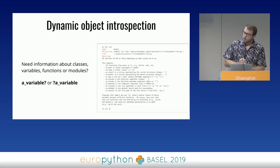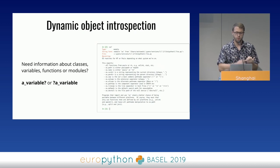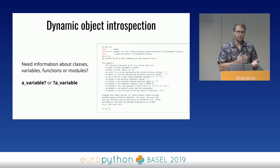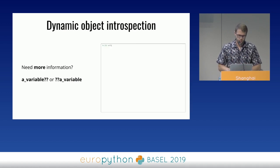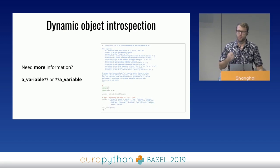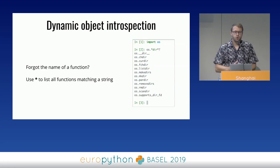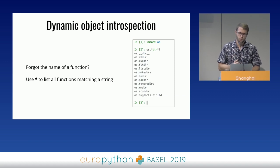What I really love about IPython is how easily you can access the documentation of basically any object — classes, variables, functions, modules. All you have to do is append or prepend a question mark to the name of the object. And if you want to see the whole source code of an object, use two question marks instead. Also, if you're not sure what the name of the function you want to call is, you can use stars as wildcards to see functions matching certain strings.